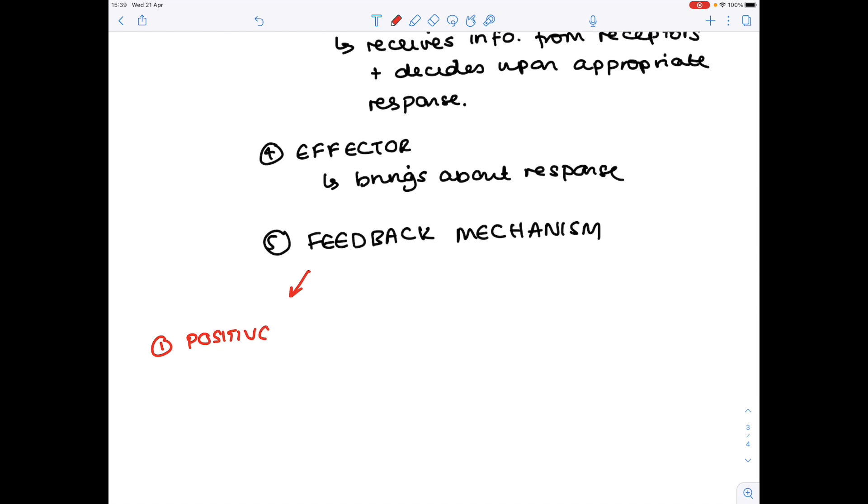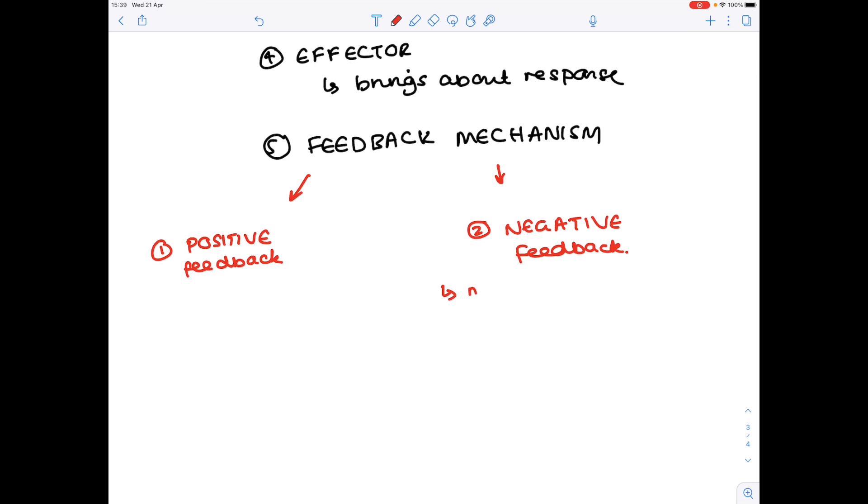And we're now going to consider the feedback mechanism in greater detail by looking both at positive feedback and negative feedback. Now you'll find that most systems have negative feedback. And so really what that means is when a change is made to that external environment, systems within the body will oppose that change.